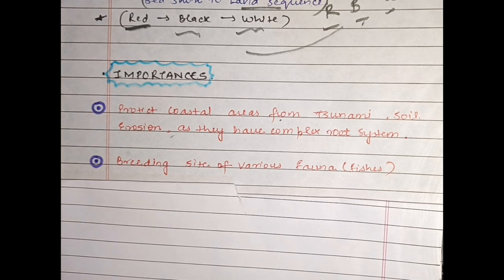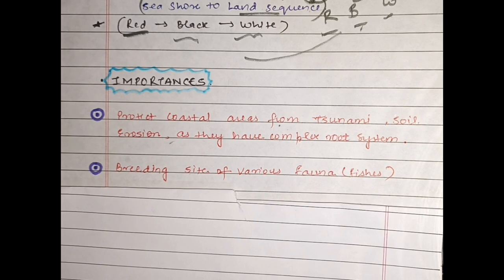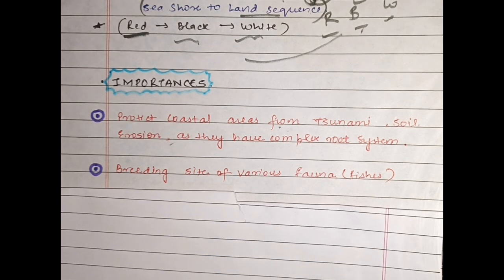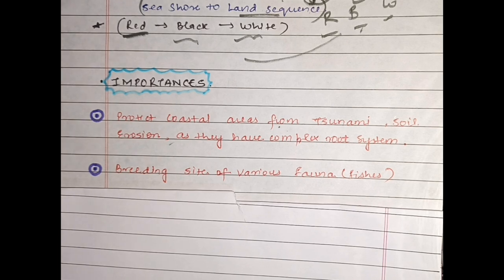Mangroves protect coastal areas from tsunamis, and also prevent soil erosion — erosion means the loss of the upper layer of soil. The second importance is that mangroves serve as a breeding site for various fauna. Fauna word jab hum bol rahe hain, to most common examples are fishes, frogs, and many other animals jo ki is particular region pe dekhne ko milte hain. Two words to remember: flora is used for plants, and fauna is used for animals.